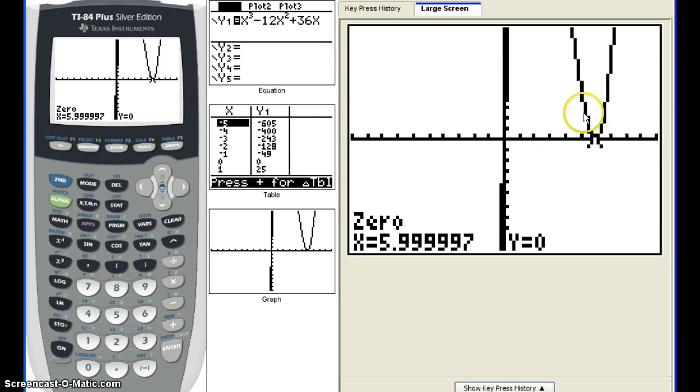Flips back up. So anytime you have a multiplicity of an even number, your graph is just touching your x-axis, but it's not actually going through it.